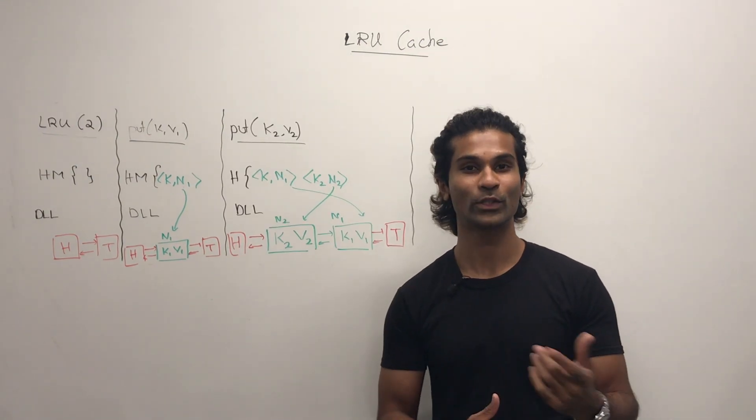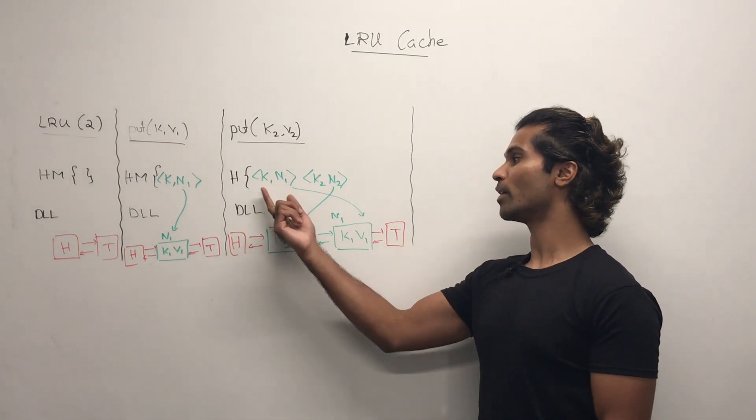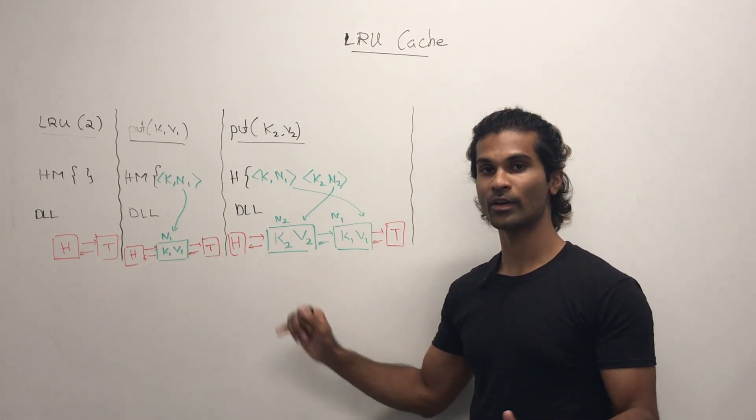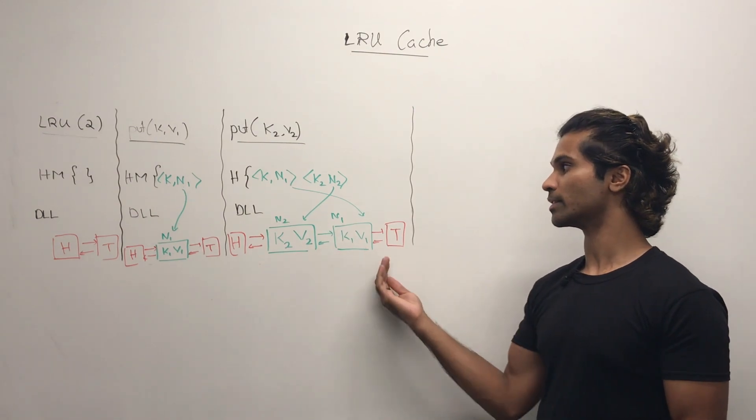Now I call put of k2v2. Here we have k1n1 and then k2n2, but the latest node is at the head where the older node is more towards the tail.